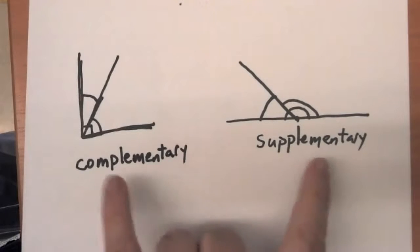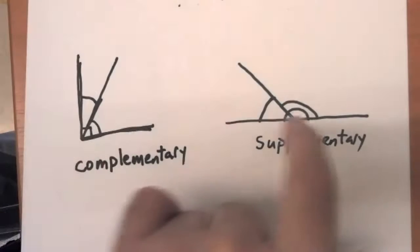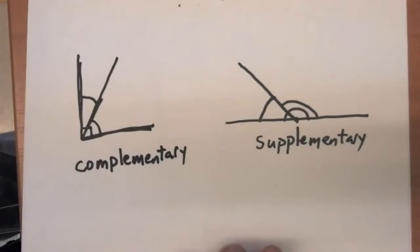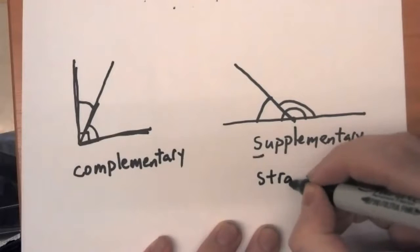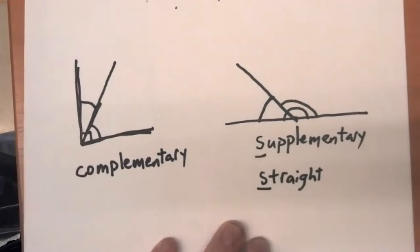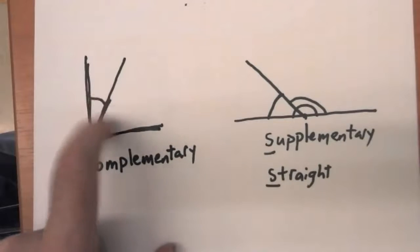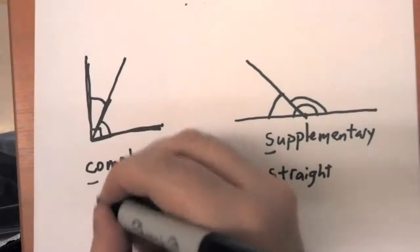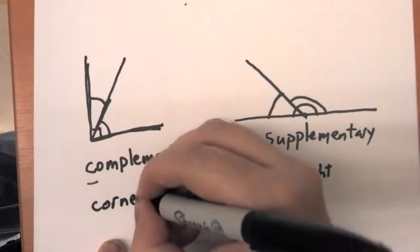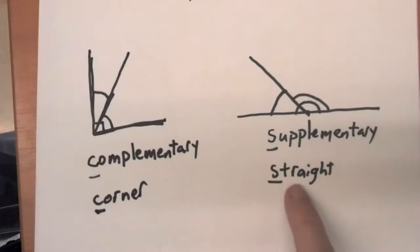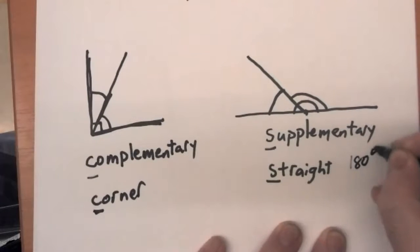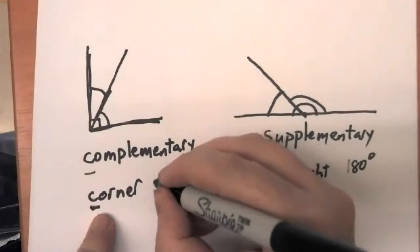An important thing is to remember which one of complementary and supplementary is talking about the right angle and which is talking about the straight angle. Here's my secret: supplementary starts with S, and when you put those two angles together they form a straight line. When you put two complementary angles together they form a right angle — and right doesn't start with C, unfortunately — but we could say they form a corner, which does start with C. So supplementary angles add up to a straight line, which is 180 degrees, and complementary angles make a corner, which is 90 degrees.